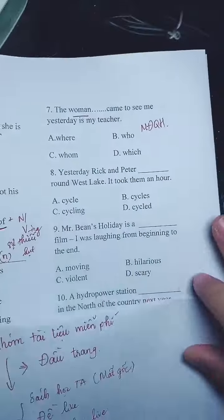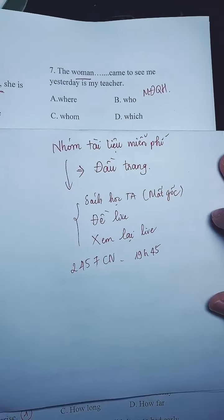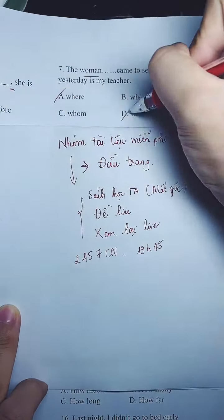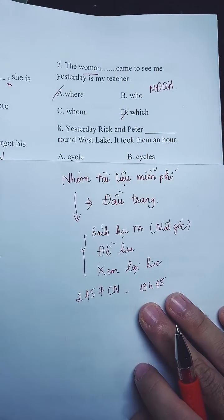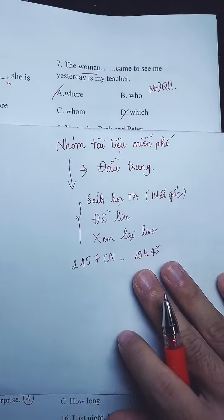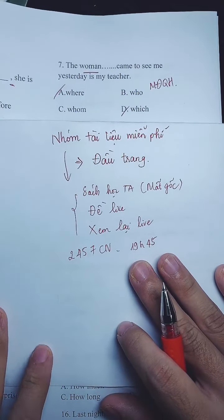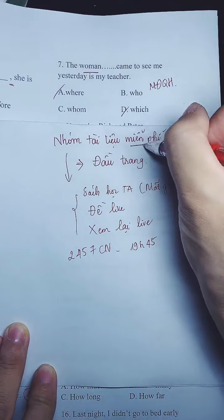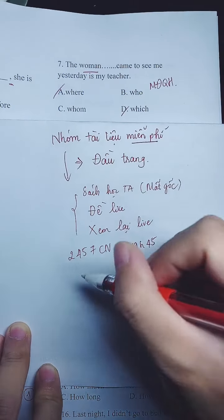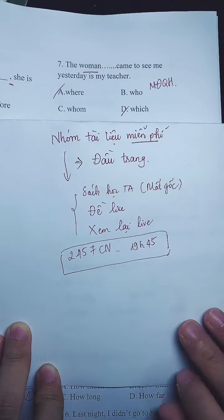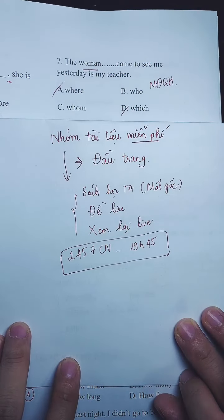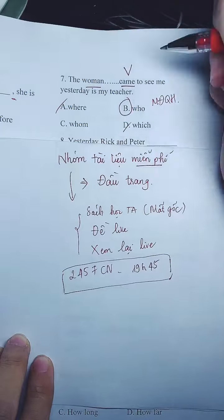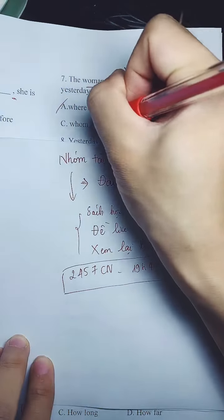Qua câu 7 — mệnh đề quan hệ. Mệnh đề quan hệ chỉ người thì chúng ta loại được A và D. Câu 7 là gì các bạn? Bây giờ 'who' hay 'whom', mình phân biệt như thế nào? Sau này nó là một động từ, thì em sẽ chọn B. Vì sao không phải là chủ ngữ cộng với động từ? Đáp án là B.